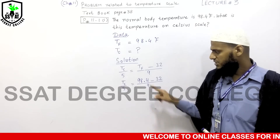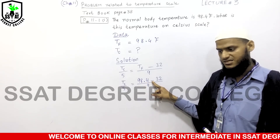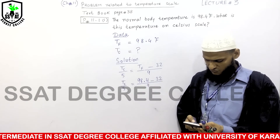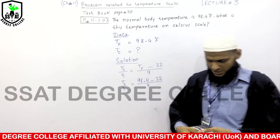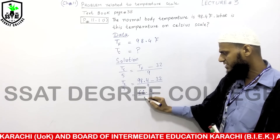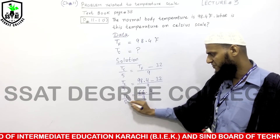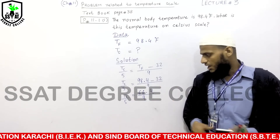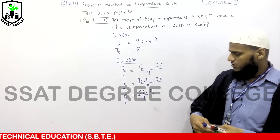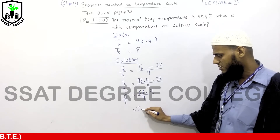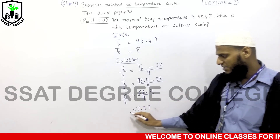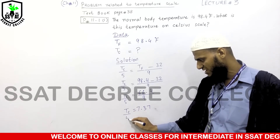We subtract 32 from 98.4. So 98.4 minus 32 gives us 66.4. On the right side we have 66.4 divided by 9, and on the left side TC divided by 5. Dividing 66.4 by 9 gives us 7.37.